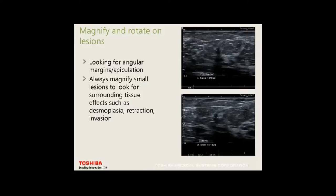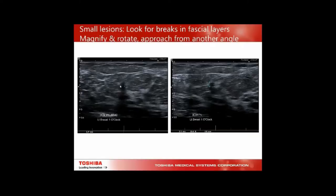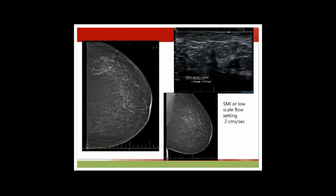Magnify and rotate on lesions, looking for angular margins and speculations. Always magnify small lesions to look for surrounding tissue effects such as desmoplasia, retraction, and invasion. Rotating a small lesion and approaching from another angle — if it's real, it will never disappear. Use SMI or low flow settings to see colour flow within or going to the lesion.